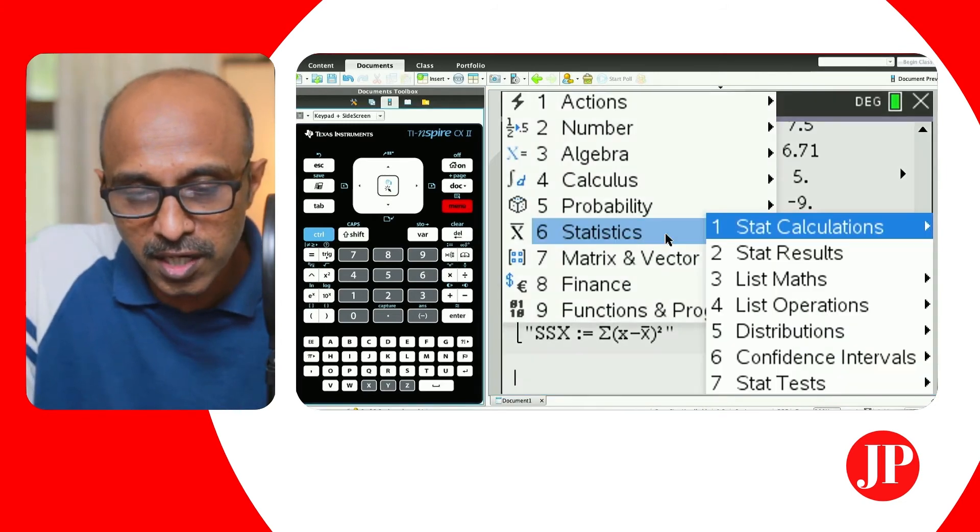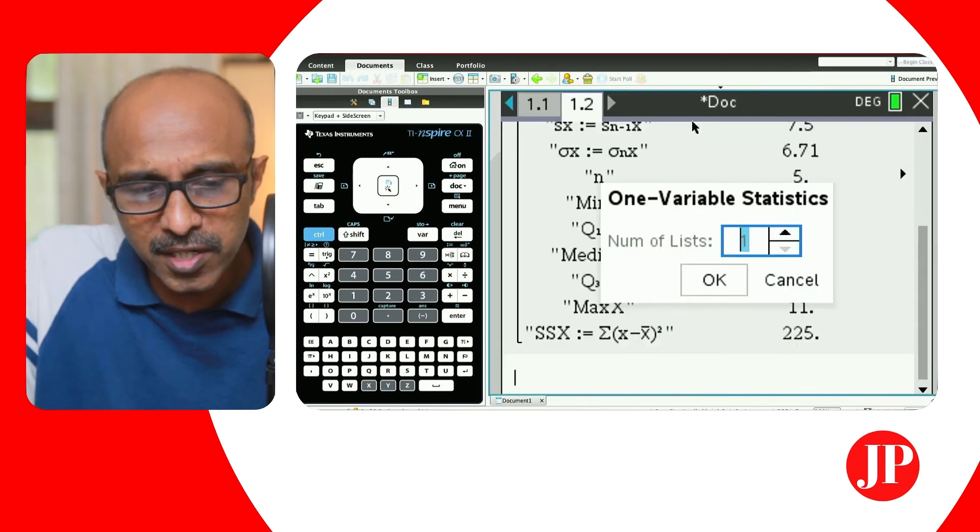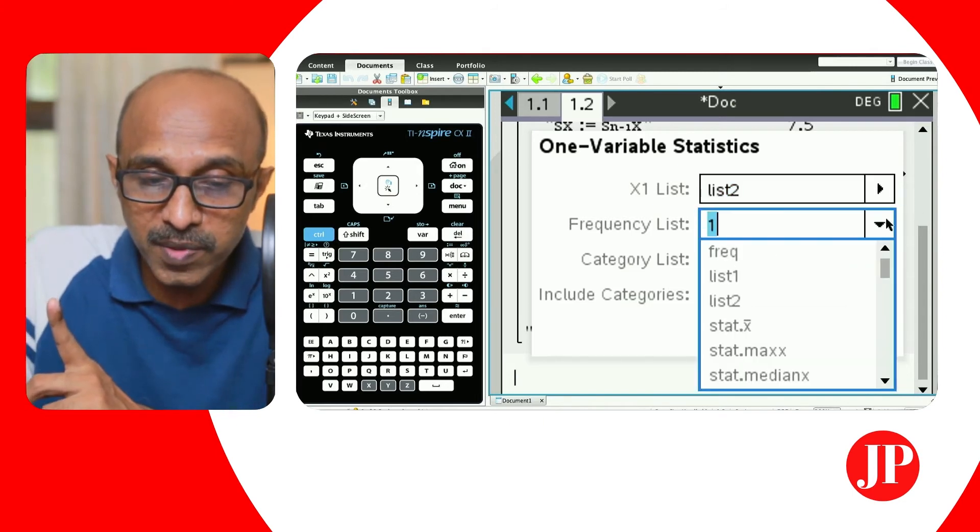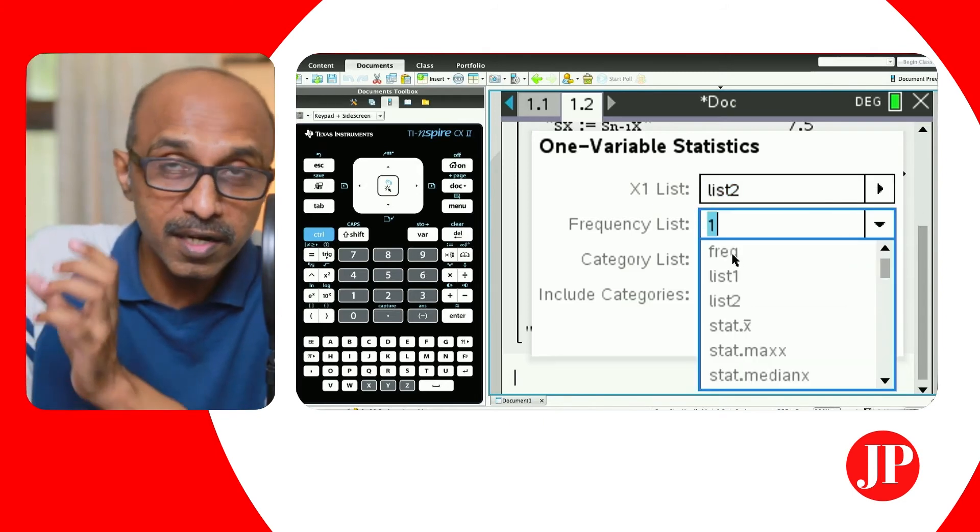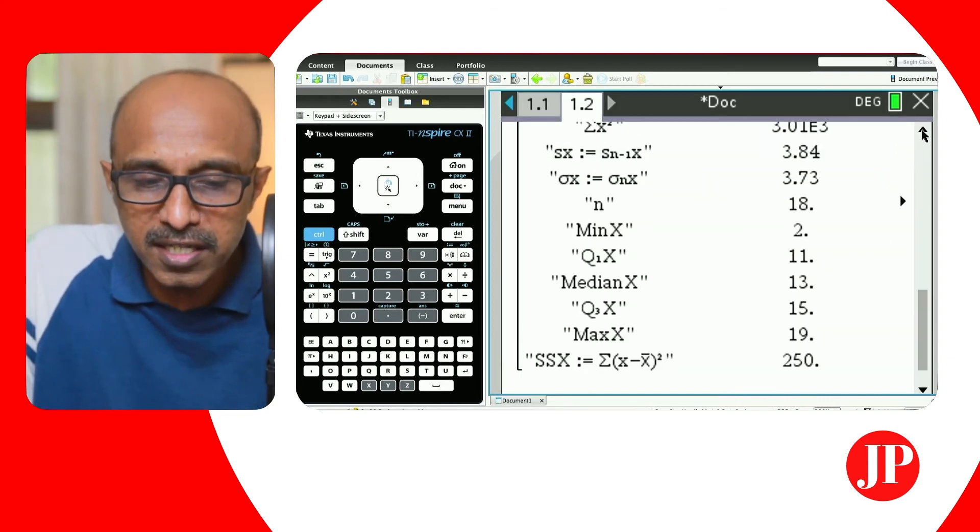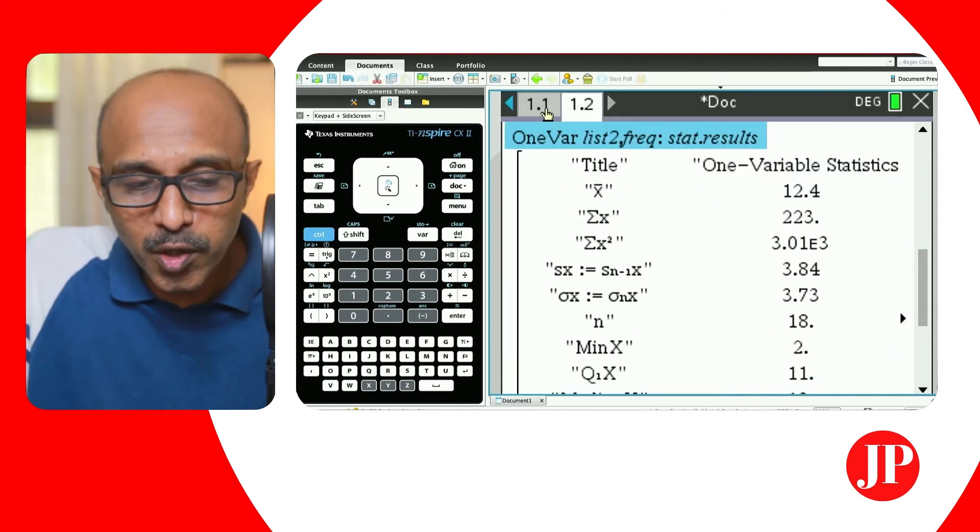And I'll do the same thing here. So if I go to statistics, stat calculations, one variable statistics, I choose one list. And here again, if I say I want the data to come from list two and the frequency to come from a column that was labeled FREQ, and I just hit enter, this might be a bit more easier to read.